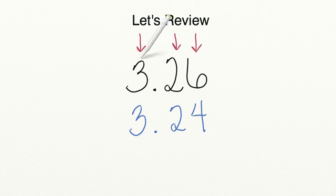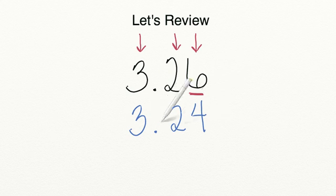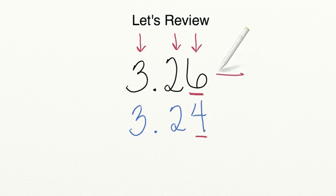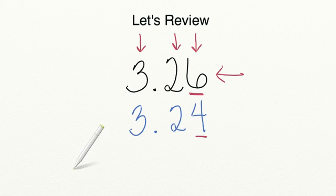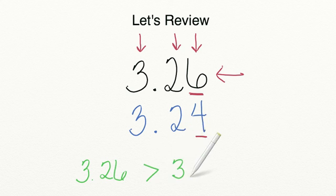As you can see with three and twenty-six hundredths compared to three and twenty-four hundredths, three and twenty-six hundredths has a larger number in the hundredths place. That means that three and twenty-six hundredths is the larger number. So when we rewrite this, we compare them by saying that three and twenty-six hundredths is greater than three and twenty-four hundredths.